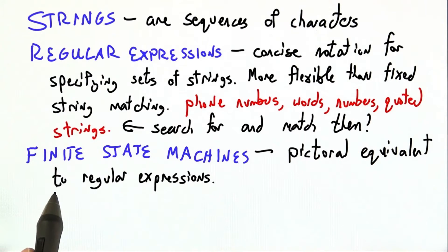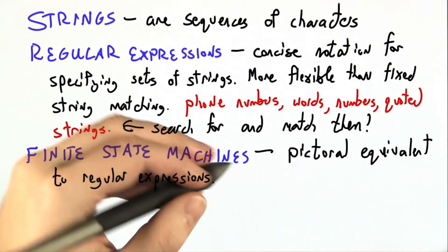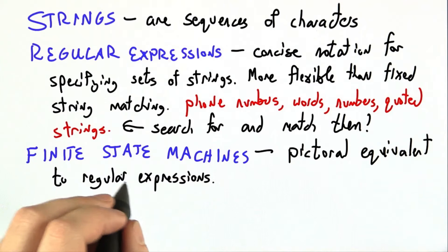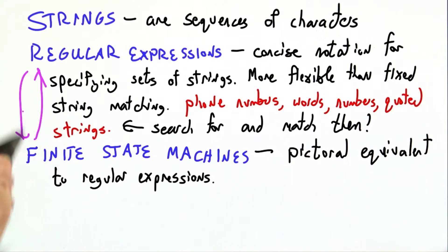Finite state machines are a pictorial equivalent to regular expressions. Every regular expression, concatenation plus question mark star, has an equivalent finite state machine. And in fact, although I didn't show it, vice versa. Every regular expression has a finite state machine, and every finite state machine has a regular expression.